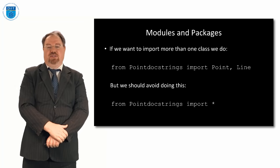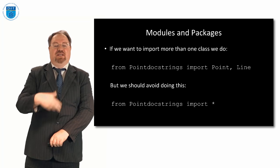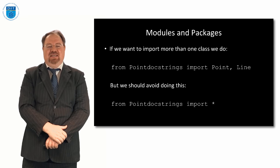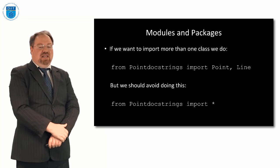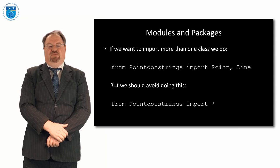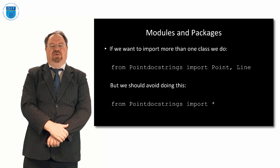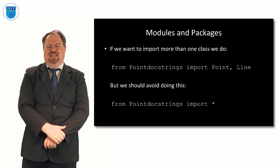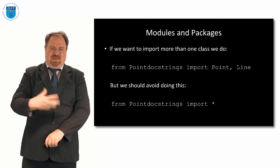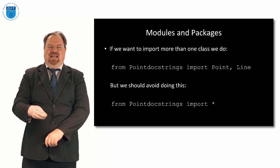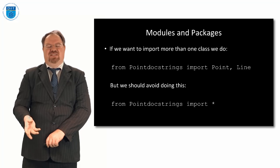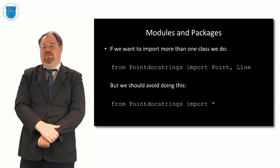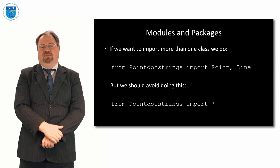We could also import more than one class, simply by saying from docstrings import point, line, square, or whatever we want. We should avoid saying from docstrings import star, because a lot of Python programmers get confused when you do that — they don't know what specific methods you want. It's better to specify which particular classes, like point and line, you want from the module.